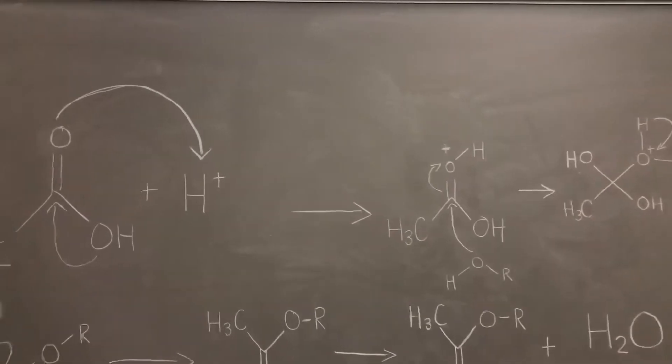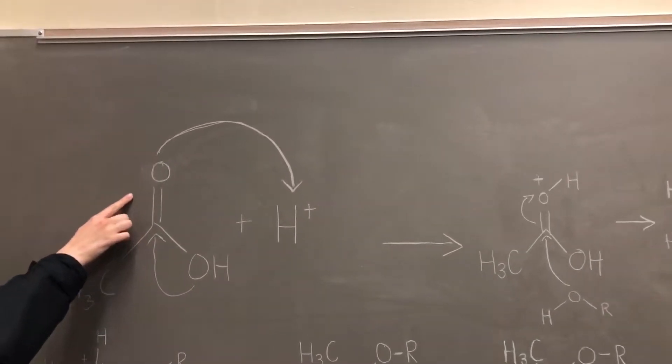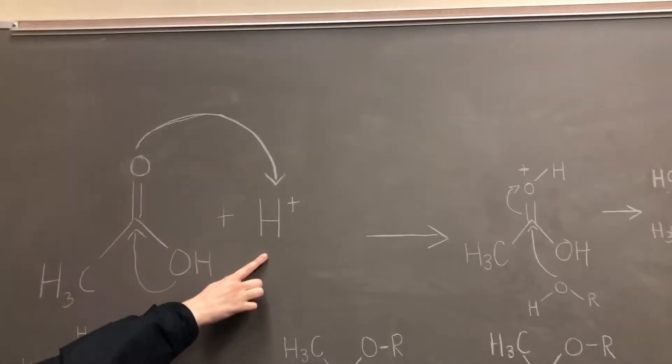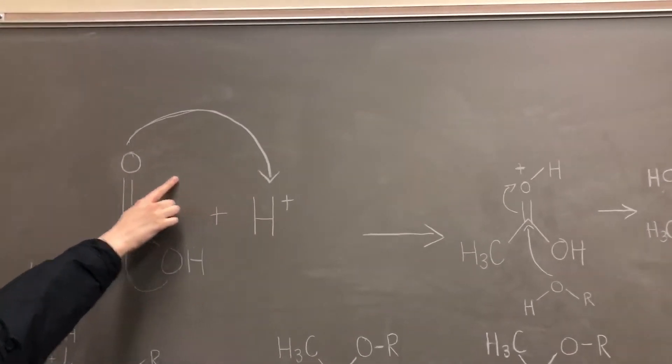The first step of this mechanism is to protonate the carboxylic acid. This is performed by using the acid catalyst, which allows for the oxygen on the carbonyl group to pull in the hydrogen molecule.